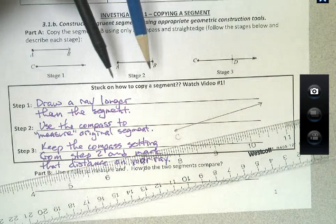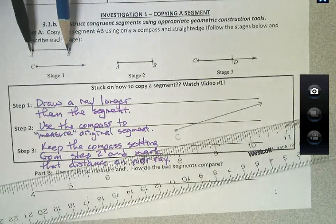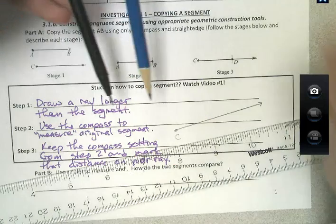So now this measurement that I have here represents the length of AB. It's opened the same amount as the length of AB. So I'm going to come over, this is my stage 3.